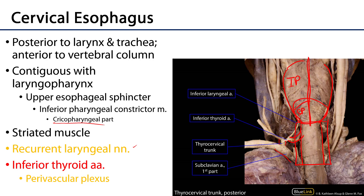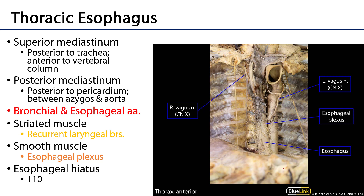At the root of the neck the cervical esophagus transitions into the thoracic esophagus, and in the superior mediastinum it will continue its association with the trachea, being posterior to the trachea. As the trachea divides into the primary bronchi, the esophagus will continue inferiorly.